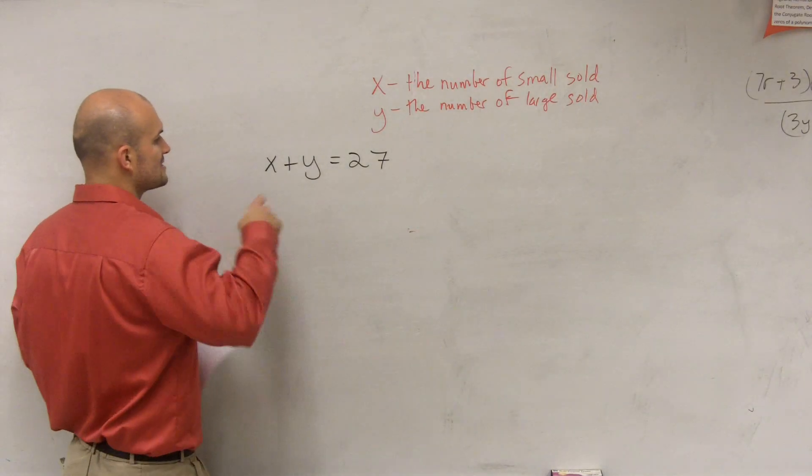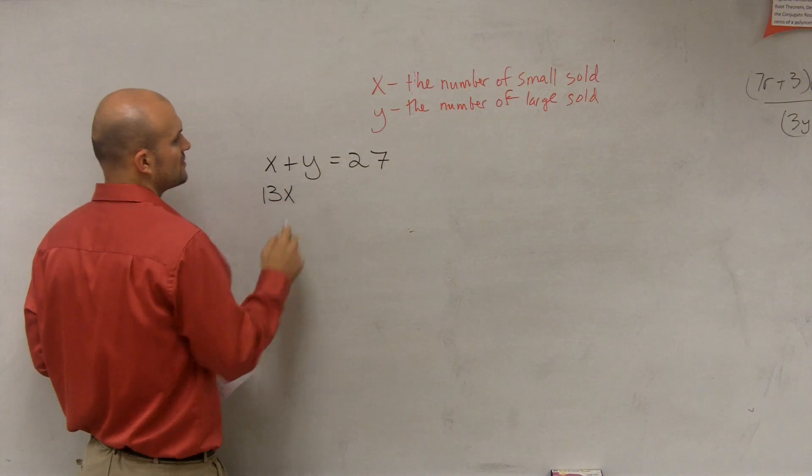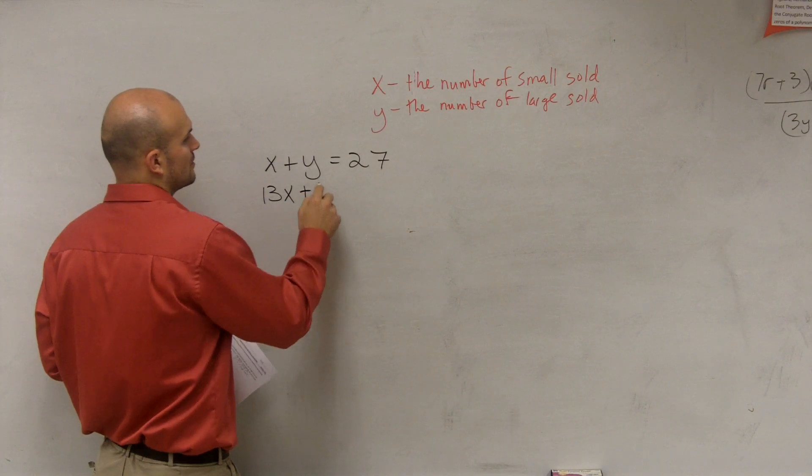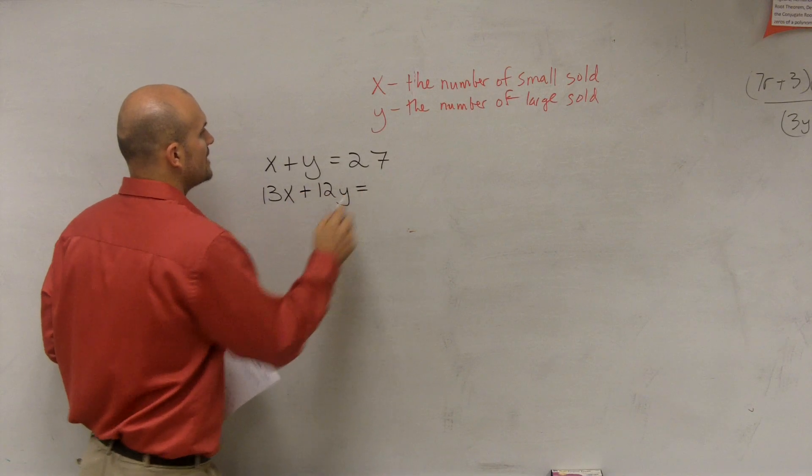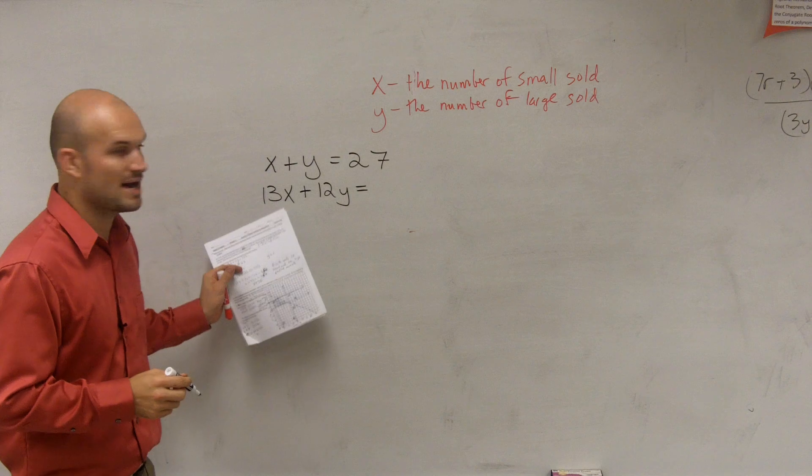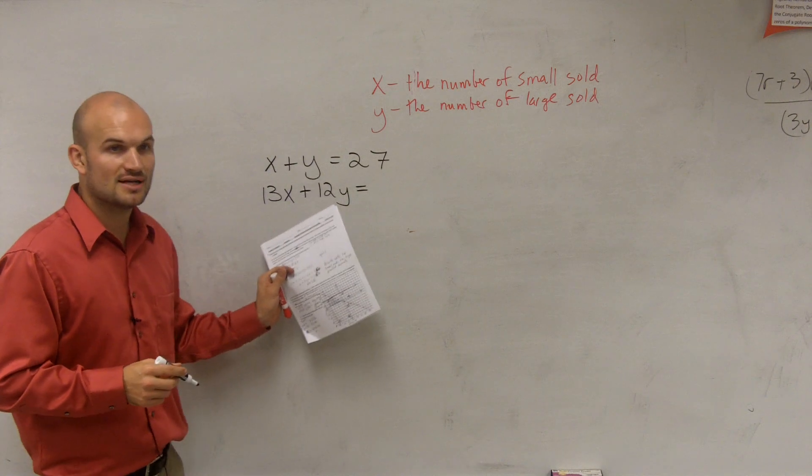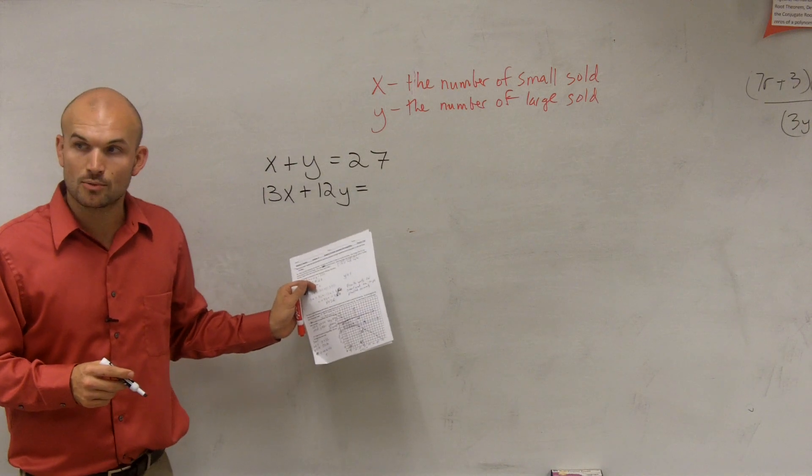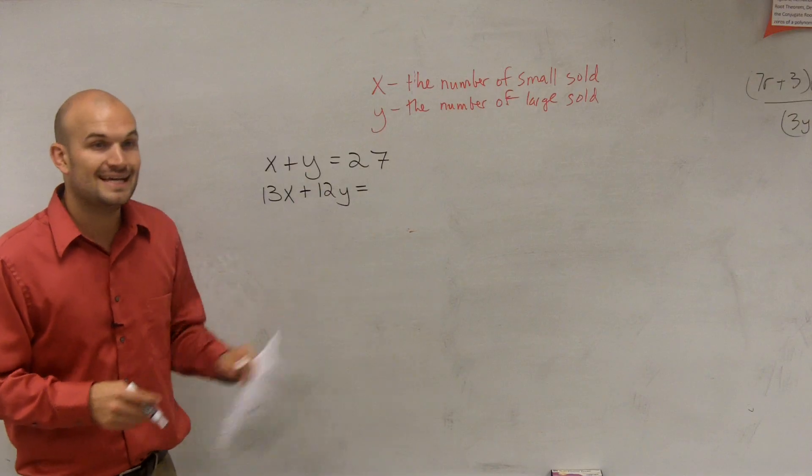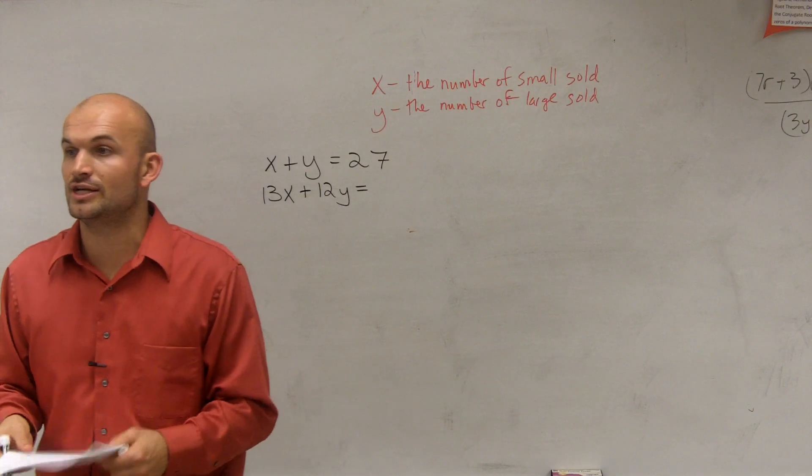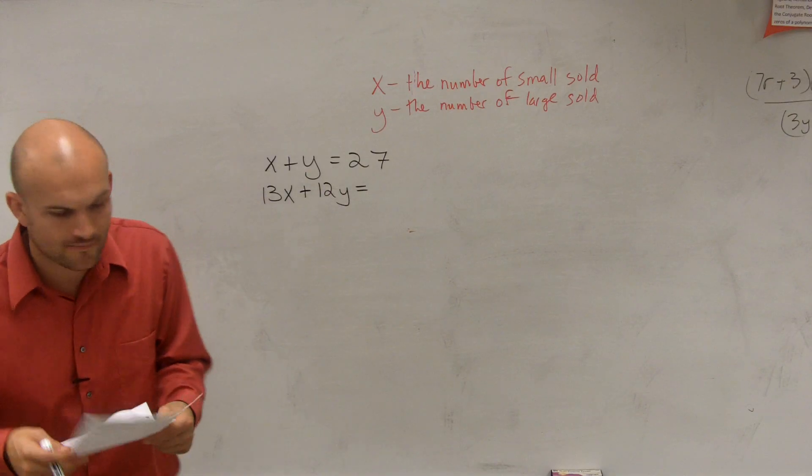12Y. 12Y. Now, so that's money, the amount of money she charges for the X plus the amount of money she charges for the Y, or per how many she sells for the Y, equals the total amount that she earns. And the total amount she earns is $350.